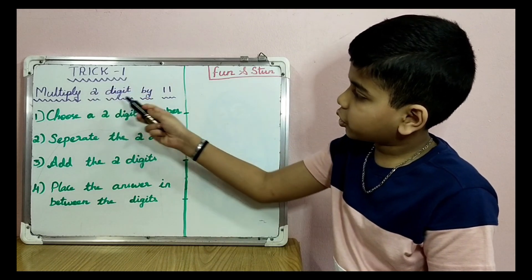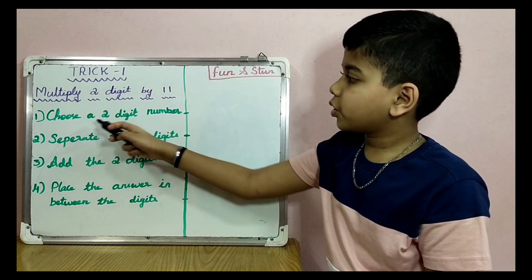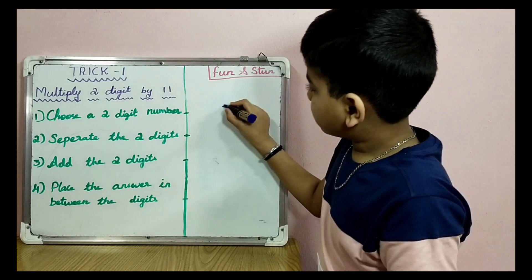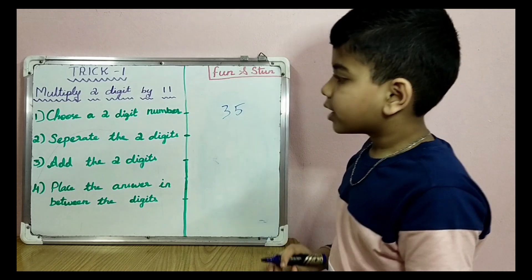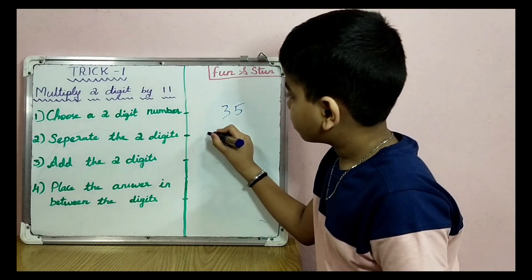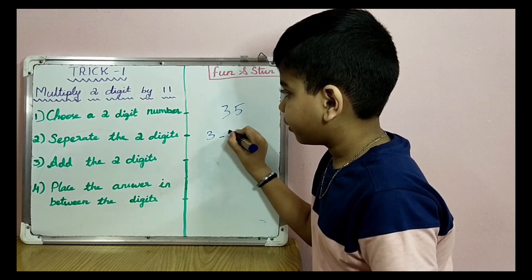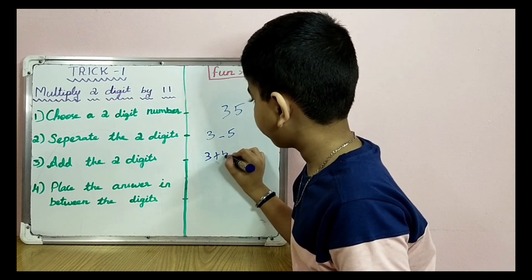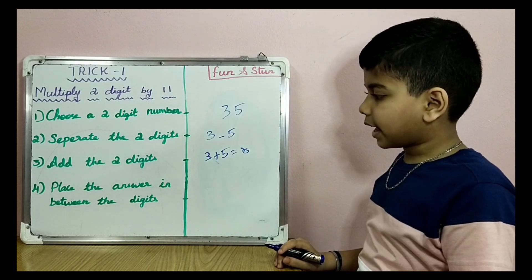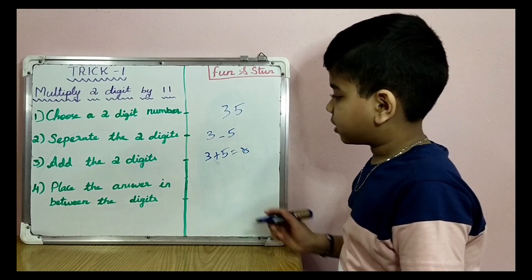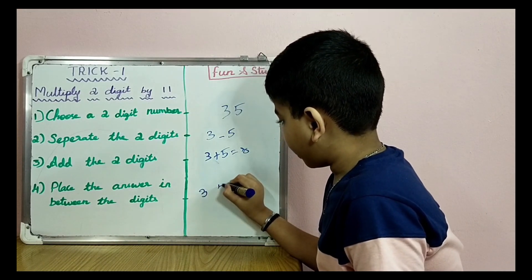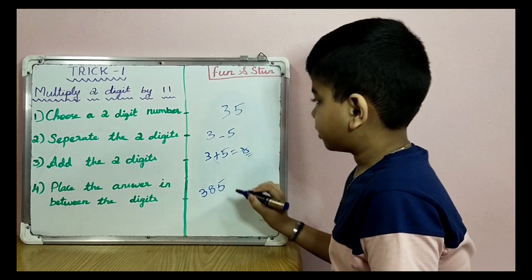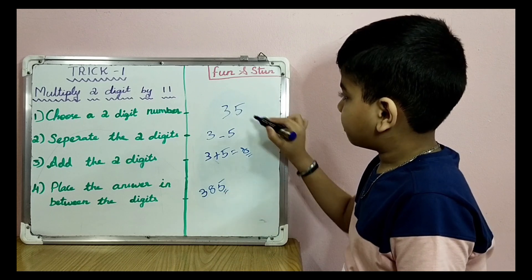Let's start with Trick 1: Multiply two digits by 11. Choose a two-digit number. First, let's choose a small digit, 35. Separate the two digits: 3 dash 5. Add the two digits: 3 plus 5 equals 8. Place the answer in between the digits: 3-8-5. This is the answer when you multiply 35 into 11.